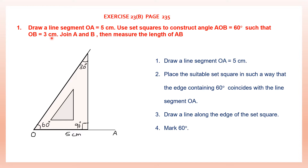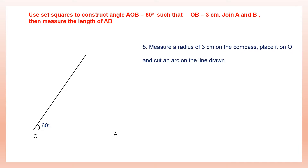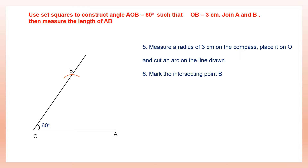Now OB equals 3 centimeters. We've removed the set squares and we have OA with 60 degrees marked. To get OB equals 3 centimeters, measure a radius of 3 centimeters on your compass, place the needle at O as center, and cut an arc on the line drawn. Keep the needle at O and cut an arc on this line. Mark the intersecting point as B.